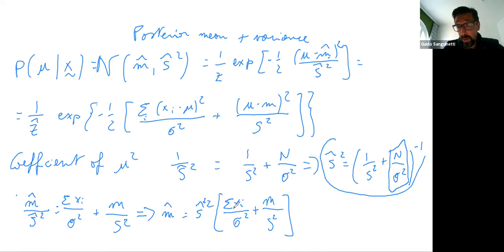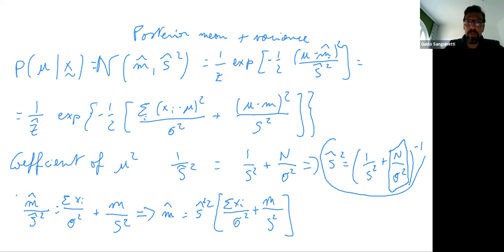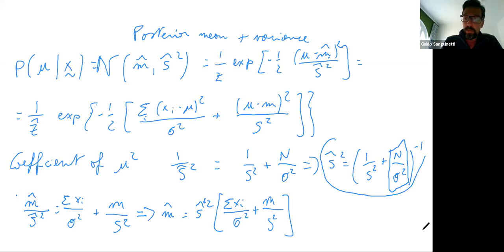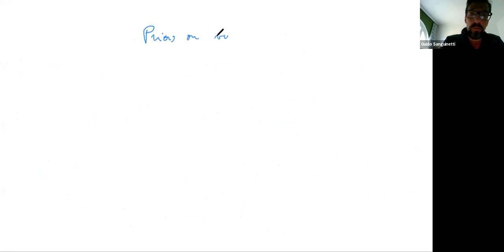When you don't have very large numbers, the prior mean M may be important, and choosing a prior with reasonable parameters can be very important. This is one connection between the frequentist sample mean and the Bayesian equivalent. Now, what about the variance? Let's look at priors on the variance, which is our other parameter.